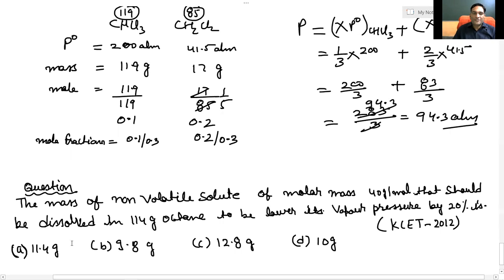Today's next question: The mass of non-volatile solute of molar mass 14 gram per mole that should be dissolved in 114 gram octane to lower its vapor pressure by 20%.